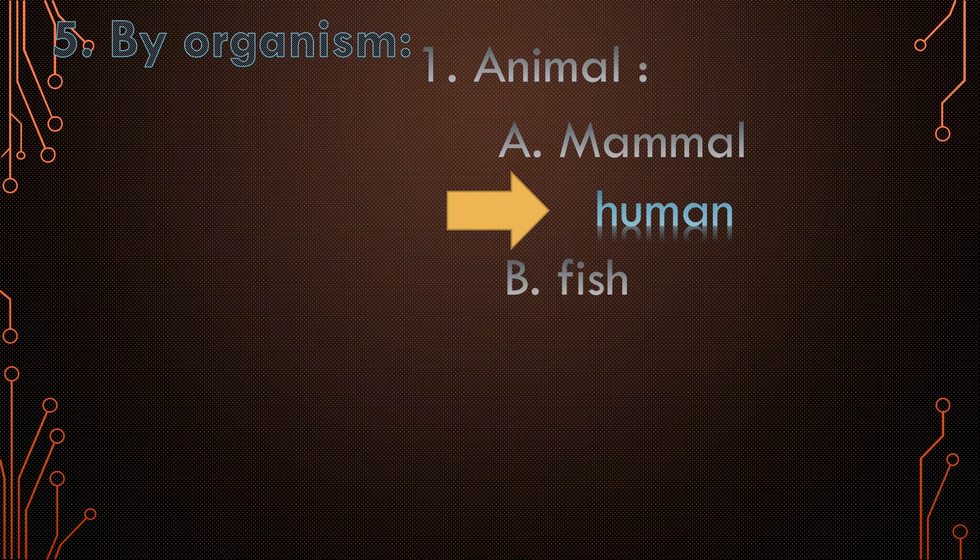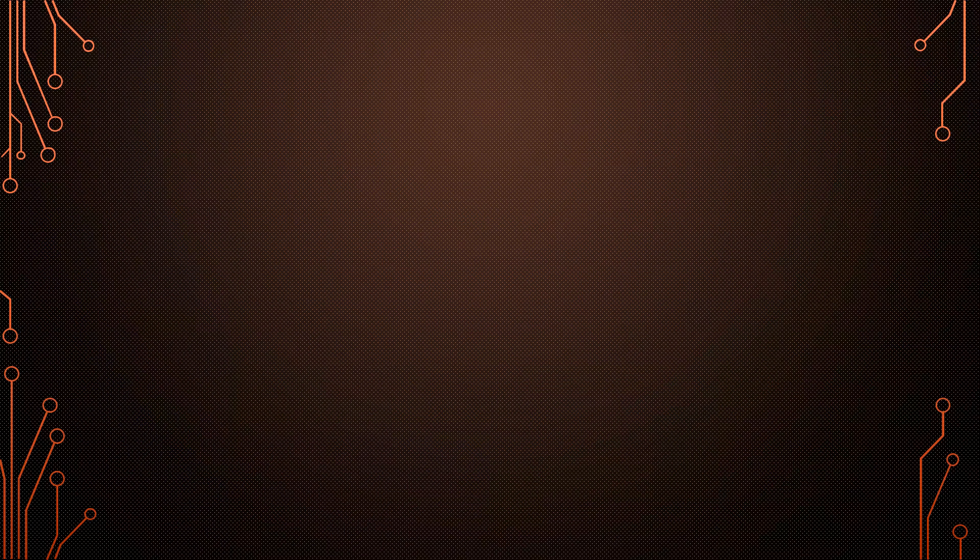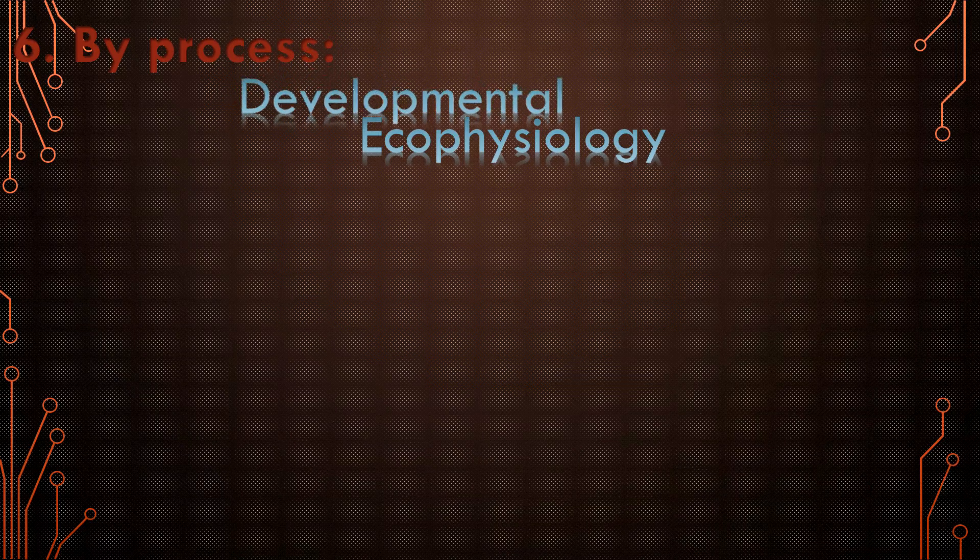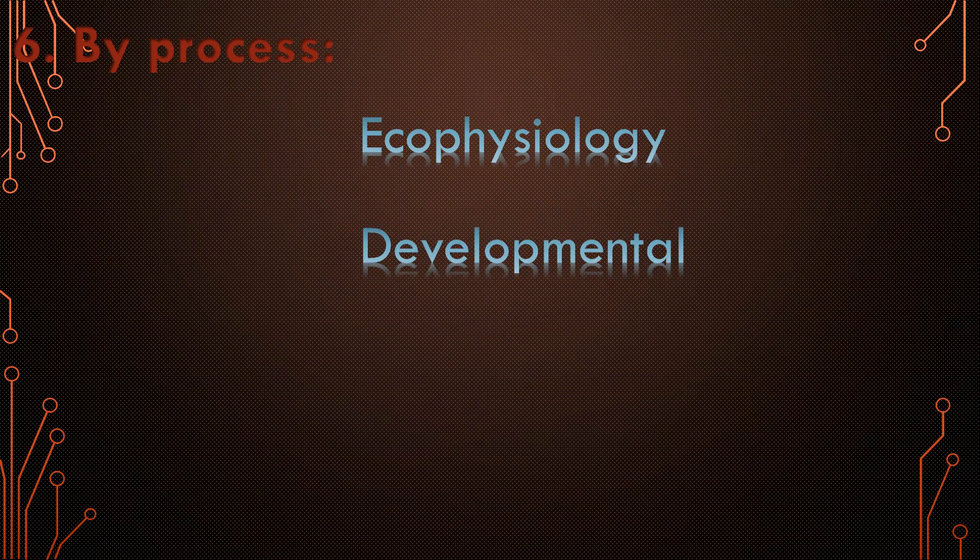There is fish physiology within animal physiology and insect physiology. Another way of categorizing physiology is by process. By process, we will see ecophysiology, developmental physiology, and laborational physiology.